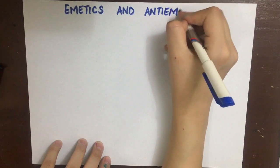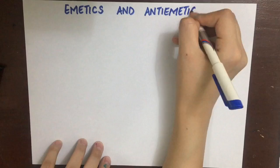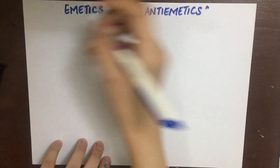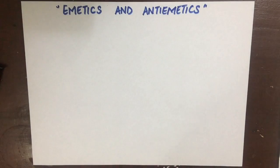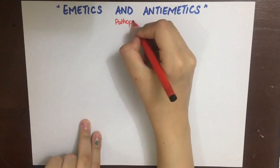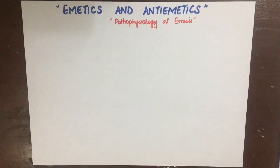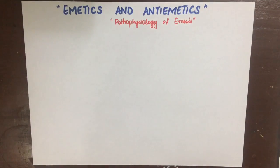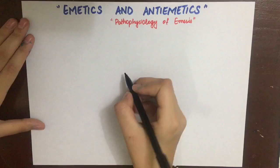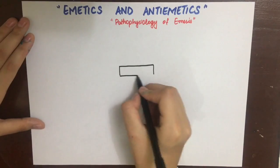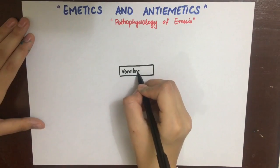To understand the drugs used to produce emesis or counteract it, we first need to understand the pathophysiology of vomiting. The first thing is that there is a vomiting center in the medulla having M1 and H1 receptors, with M1 being the main receptors. This vomiting center can be stimulated by a number of different pathways.